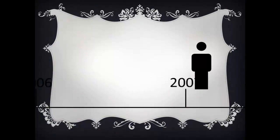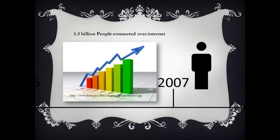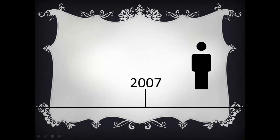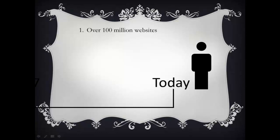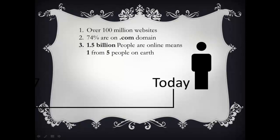In 2007, 1.3 billion people connected over the internet. And finally, today there are over 100 million websites. 74% are on dot-com domain, and 1.5 billion people are online, meaning one from five people on Earth is online.